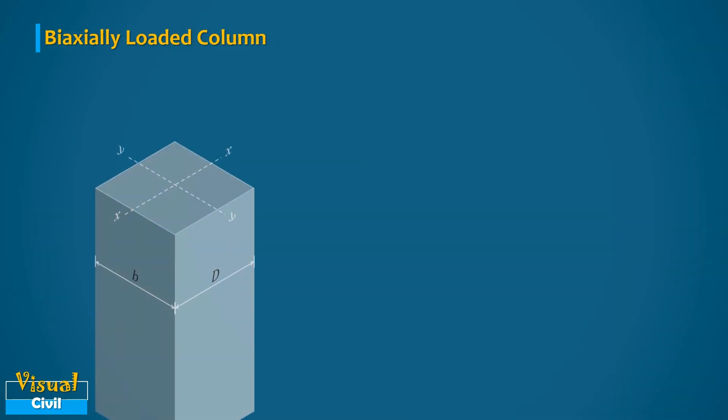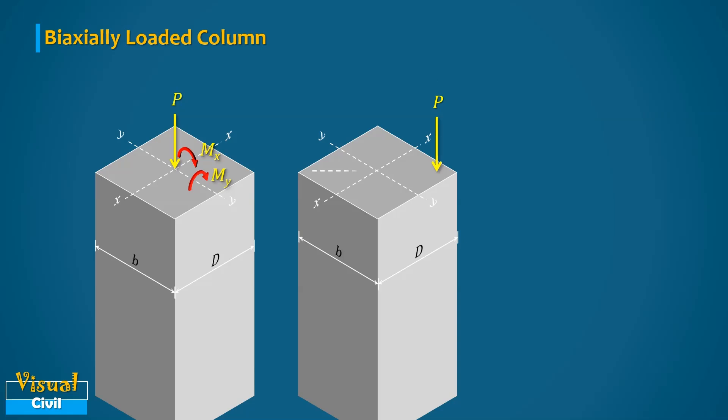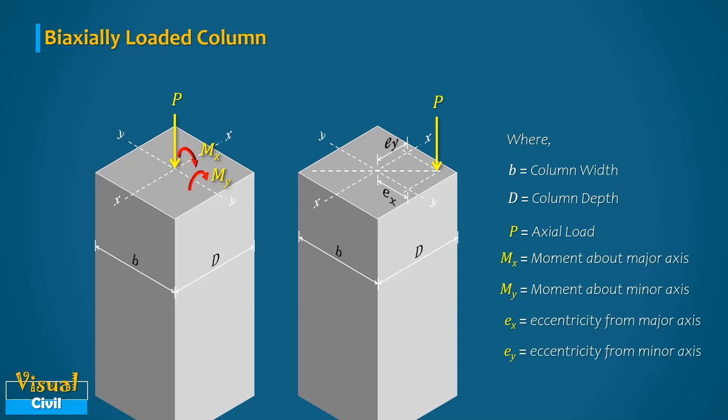Now, let us move to third type that is biaxially loaded columns. When a column is subjected to an axial load with a moment about both major axis and minor axis or load will act at an eccentricity of EX from major axis and EY from minor axis, then we can say the column is axially loaded with biaxially moment.